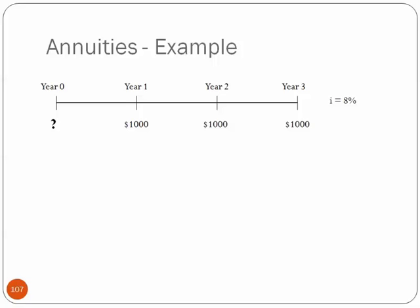In year one, we're going to receive $1,000, and in year two, $1,000, and in year three, $1,000. Now given an interest rate of 8%, what is this stream of three $1,000 payments spread out over three years worth today?